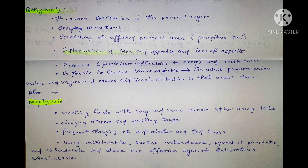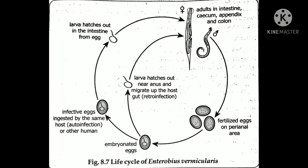This is the main topic of Enterobius vermicularis. The adult worm deposits eggs in the perianal area. There are two types of infection: auto-infection and retro-infection. In retro-infection, larvae migrate back through the anus up to the intestine and caecum. This is the entire life cycle of Enterobius vermicularis.